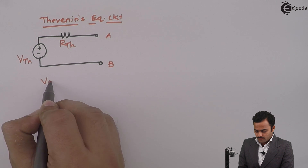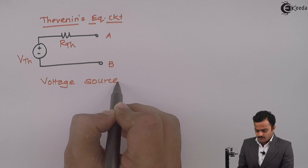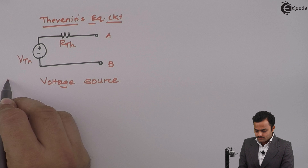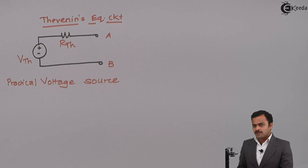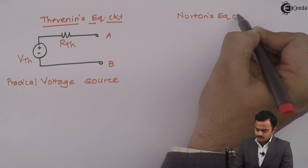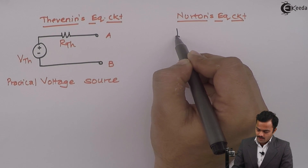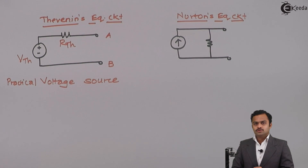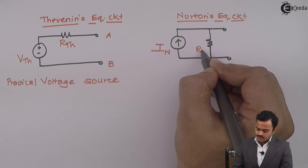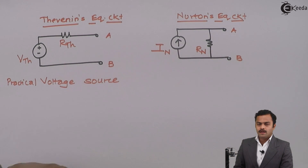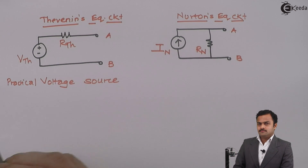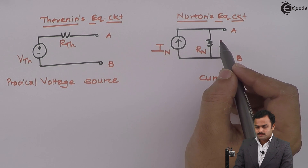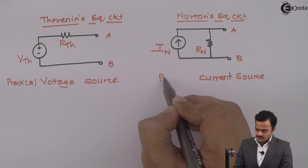Norton's equivalent circuit has a current source IN with parallel resistance RN between terminals A and B — a practical current source, since the resistance acts as its internal resistance. These two circuits are linked to one another: a practical voltage source can be converted to a practical current source, and vice versa.